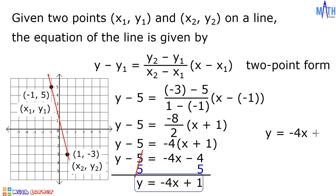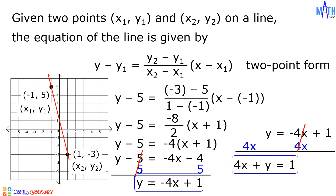Let us express y equals negative 4x plus 1 in standard form. Let us add positive 4x on both sides. Since negative 4x plus 4x is equal to 0, then we have 4x plus y equals 1. And this is the equation of the line passing through the points negative 1, 5 and 1, negative 3 in standard form.